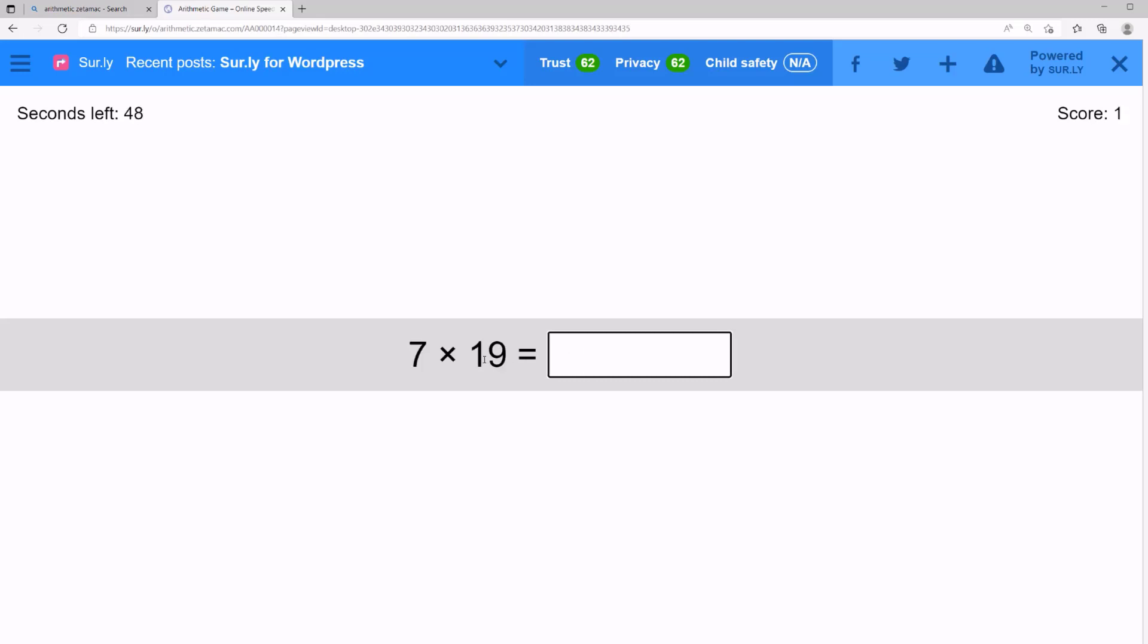We have 19, which is 10 plus 9. 10 times 7 is 70, but we need to add 7 times 9, which is 63. What's 70 plus 63? It's 133. That's a bit hard to do in your head, but if you practice, you'll get better.